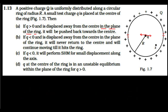If we displace this positive charge from the center to a nearby point, that point is closer to one element, so the force in that direction will be more than the opposing force, and the net force is towards the center. Considering all elements of the ring, the net force always points back to center, meaning this is a stable equilibrium situation. Option A is correct.